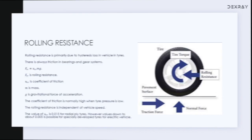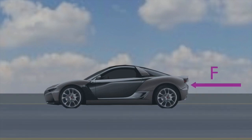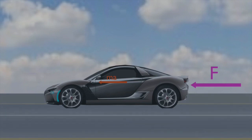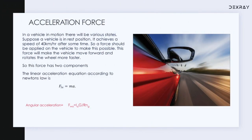Now it's time to accelerate our vehicle. Suppose the vehicle is moving at 40 meters per second and we need to accelerate to 100 meters per second — for that we have to apply a force. This force must move the car forward as well as make the wheels rotate faster. So it has two components: one which makes the car move forward, and another which makes the wheels rotate faster. We have to provide both linear acceleration and rotational or angular acceleration. This acceleration force therefore has two components: linear acceleration and angular acceleration.